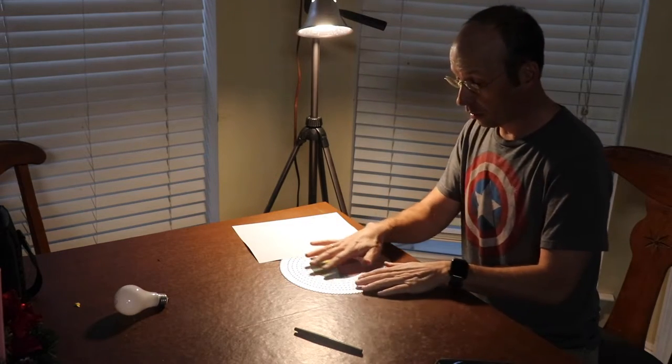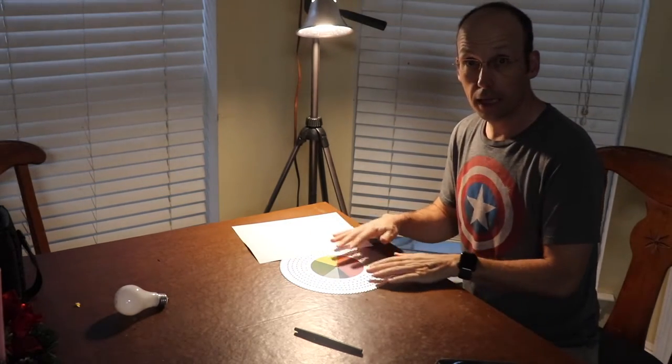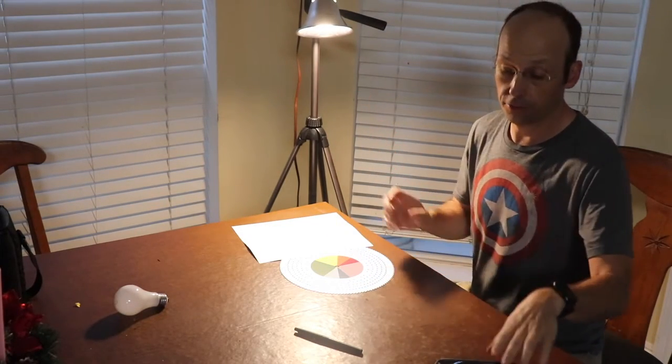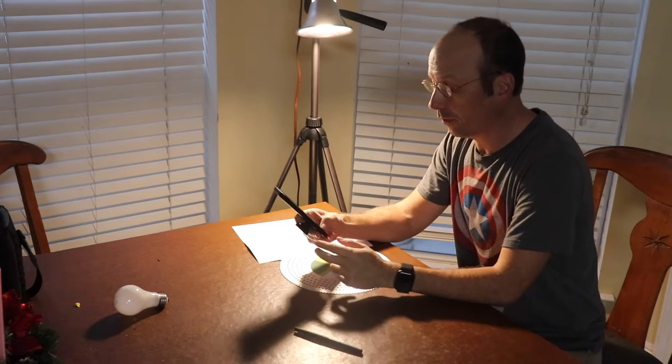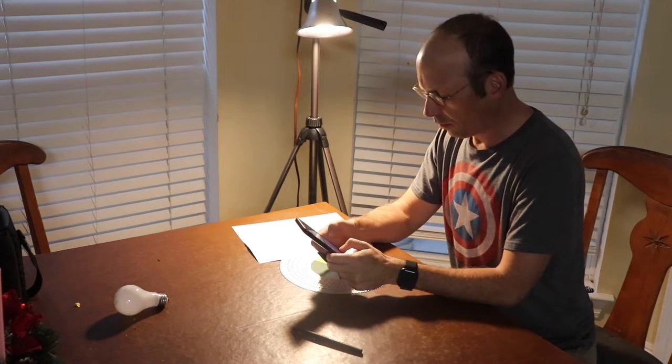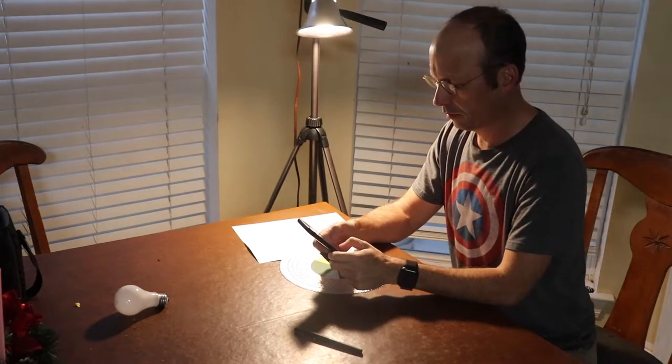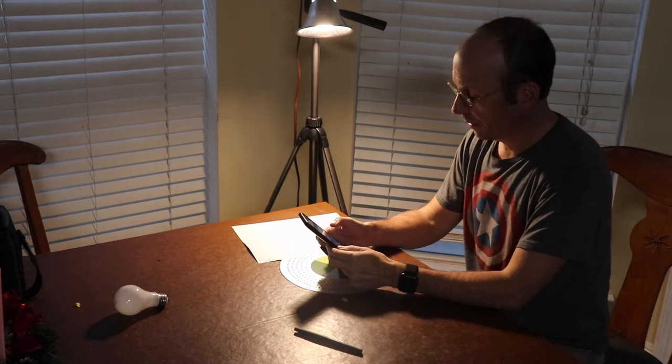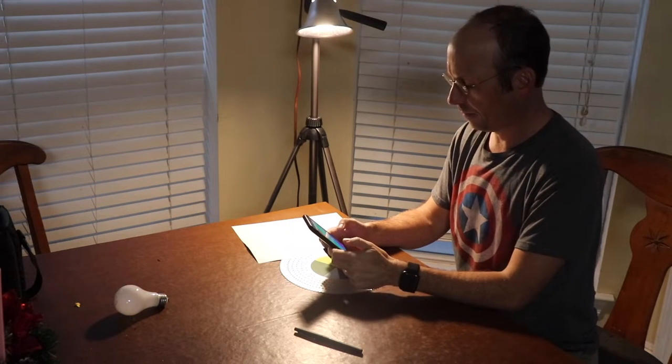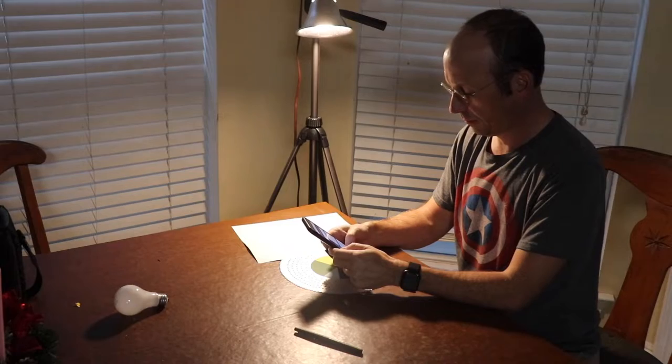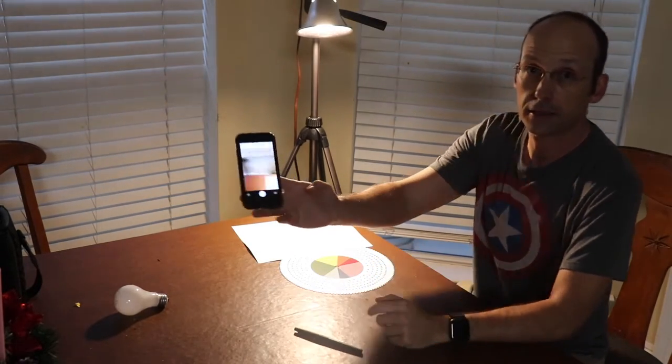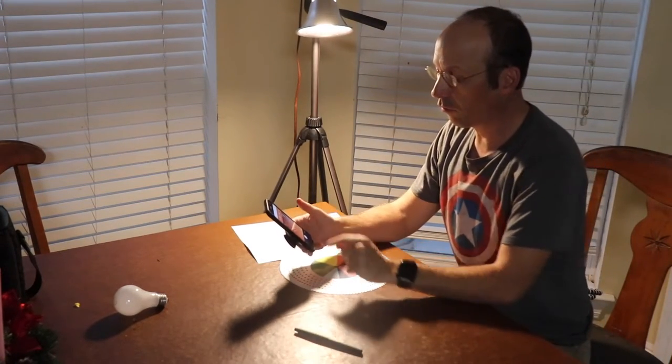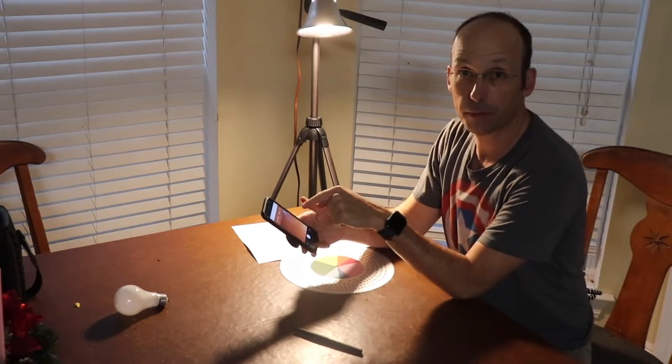What we're going to do is take different lights and look at something like this and see what colors we measure with our phone. I have here white, and I've turned off the overhead light so we can focus on this light and not other things.